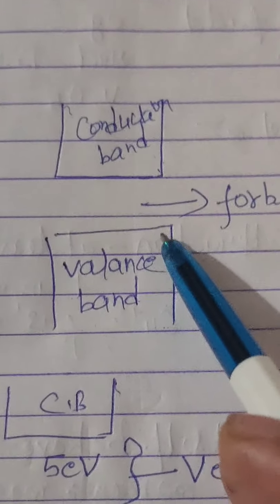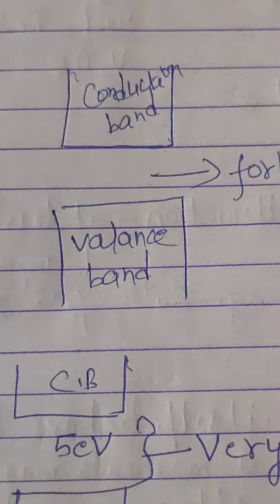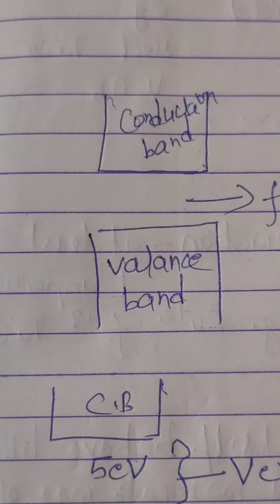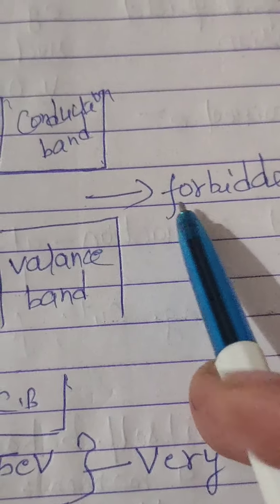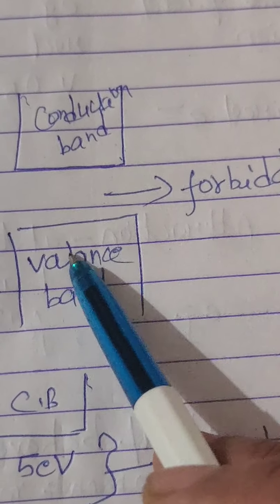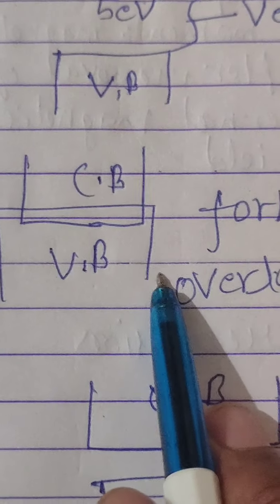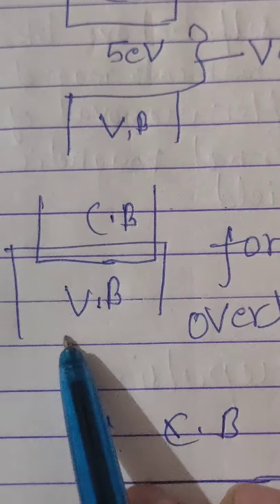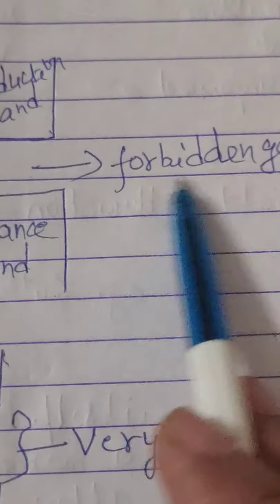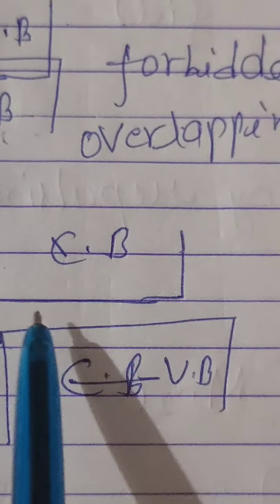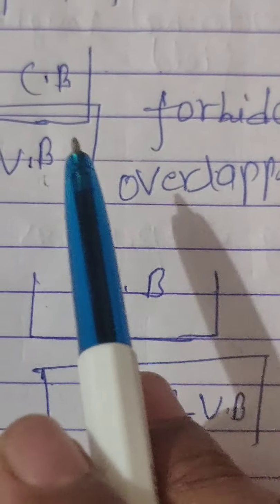When the valence band and conduction band overlap each other, there is no forbidden gap — this element is a conductor. In insulators, the forbidden gap is very large. In semiconductors, the forbidden gap is smaller than in insulators but larger than in conductors.